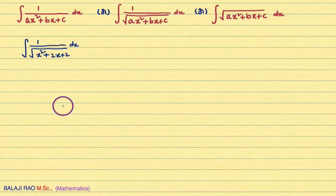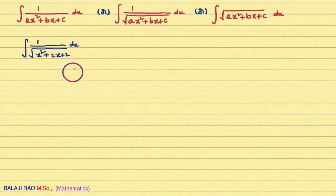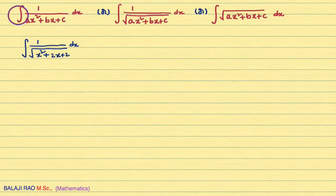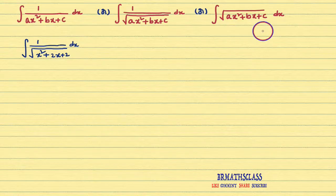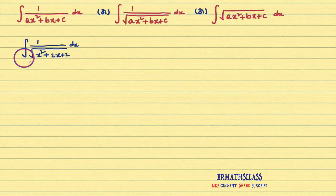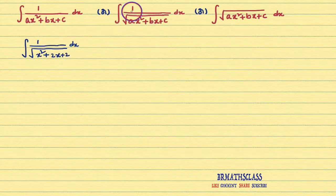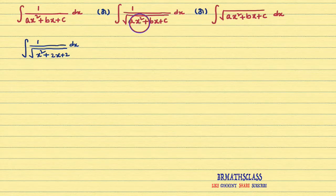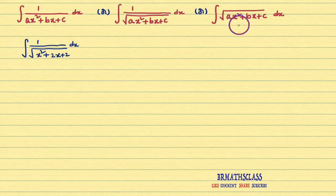Hi friends, I am Balaji Rao. Welcome to BRMAX class. In this class, we will learn how to calculate this integral. If the given integral is of this form, or this form, or this form, then the procedure is the same. First, observe which form this problem belongs to. This problem has a square root in the denominator, so it comes under the form: integral of 1 divided by square root of ax² + bx + c dx. If the problem is any one of these three forms, the procedure is the same.